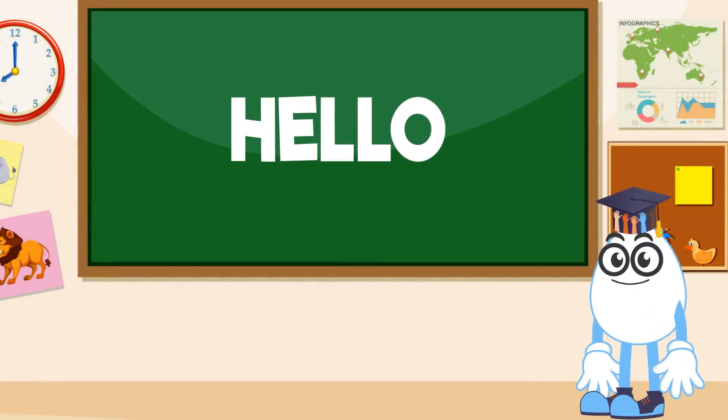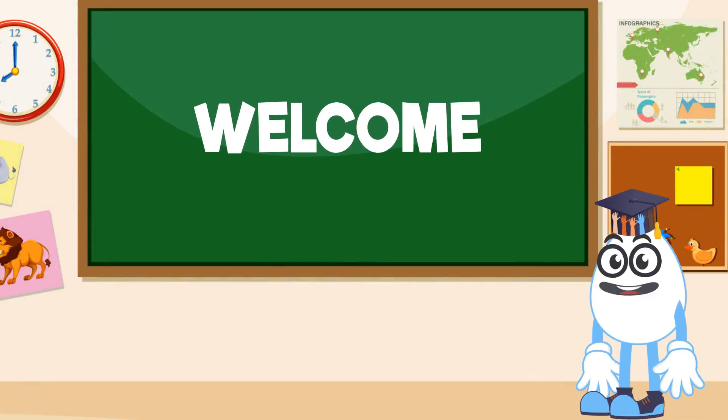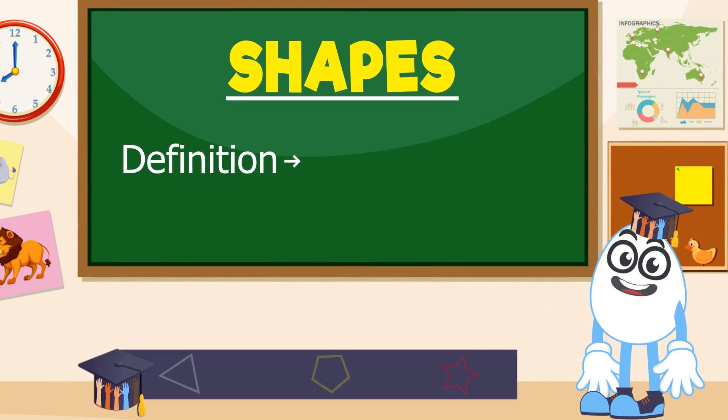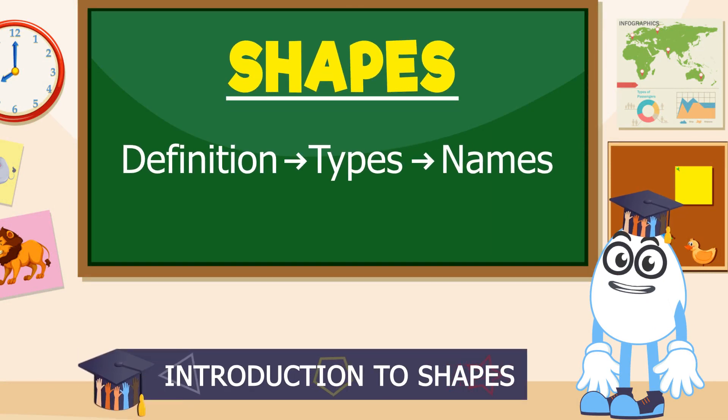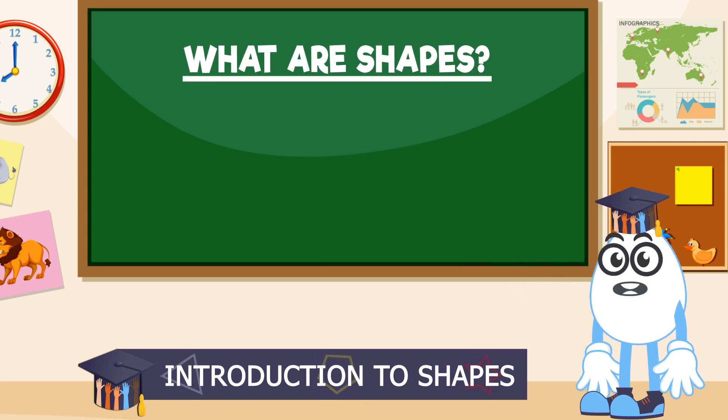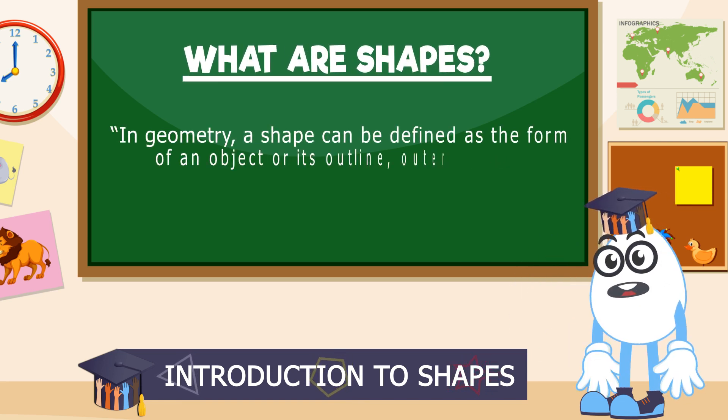Hello everyone, welcome to today's lesson. Today we are going to learn about shapes: definition, types, and different shape names. What is a shape? In geometry, a shape can be defined as the form of an object or its outline, outer boundary, or outer surface.